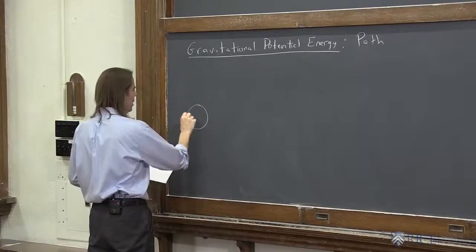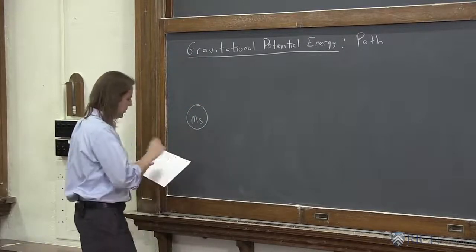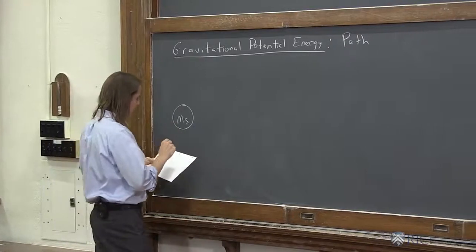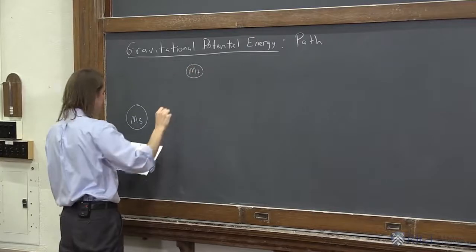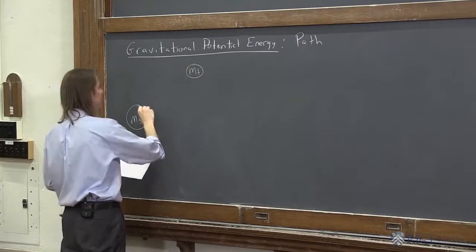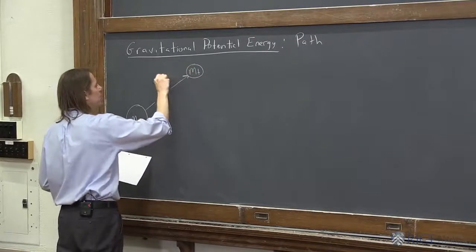Let's look here at, say, there's the source mass, like the sun, and here is the test mass, like the Earth. And let's say, and this is the initial R.